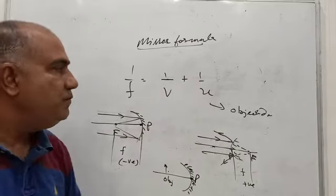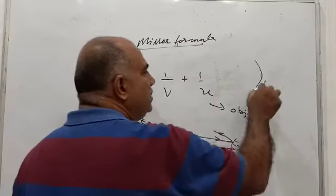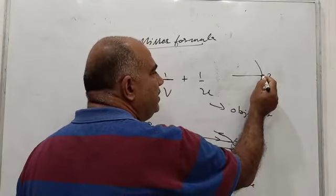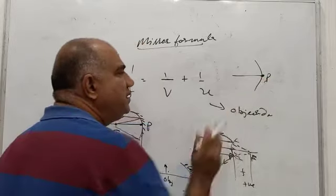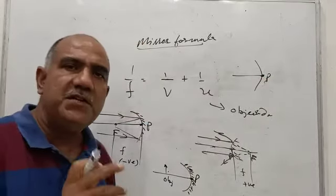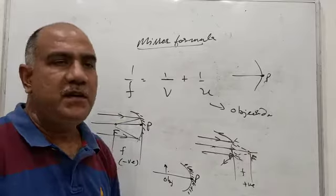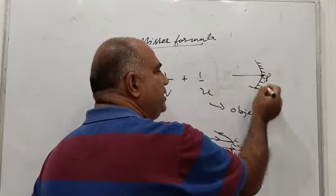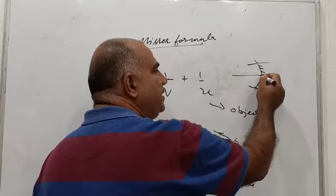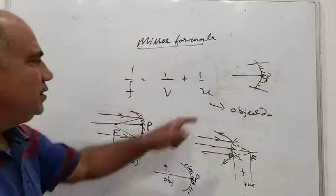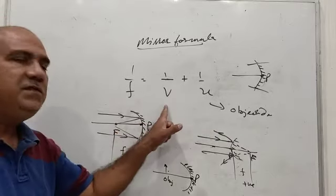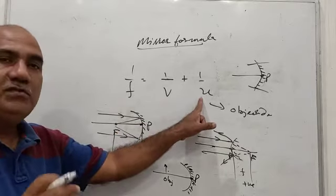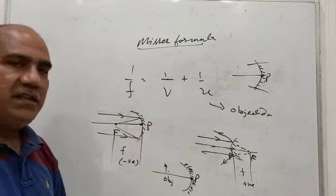Both image distance (v) and object distance (u) are always measured from the pole of the mirror. The pole is the midpoint of the actual reflecting surface. So u is measured from the pole, v is also measured from the pole — v is image distance and u is object distance, and f is the focal length.